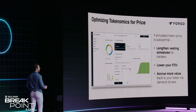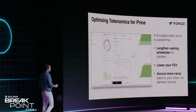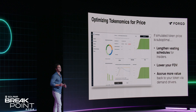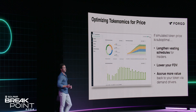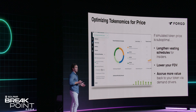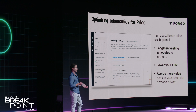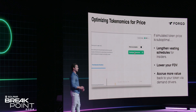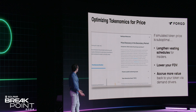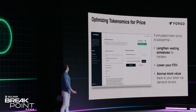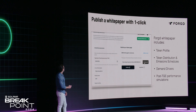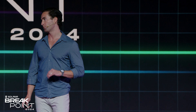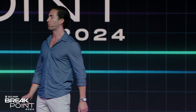Where it gets really fun is we help you simulate post-TGE performance based on these inputs. So if simulated post-TGE performance isn't great and your price is going down only, you can adjust the inputs and optimize for a more successful launch strategy. Once you've finalized your tokenomics, you can publish a white paper with just one click directly from the platform.